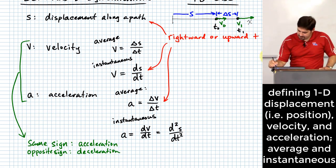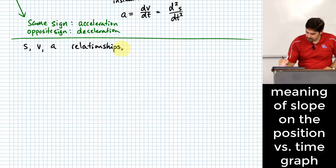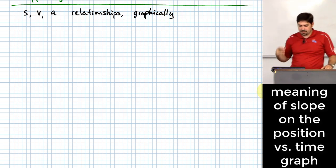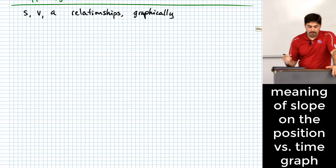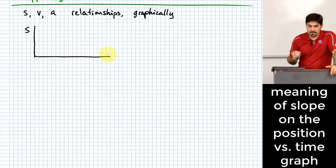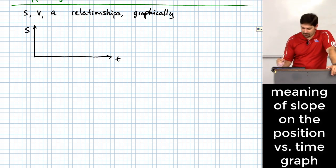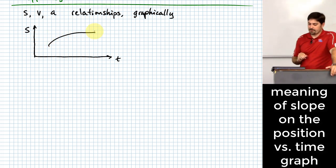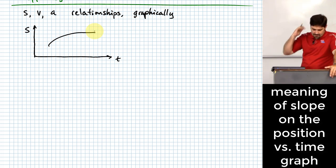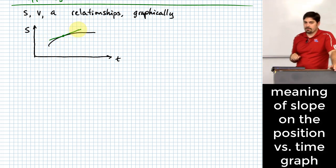Now we're going to look at a few graphs — the S, V, and A relationships graphically. The first is the S-T curve: S being displacement and T being time. I'll draw some shape of a curve on this graph. At a particular point, think of the tangent line and the slope of that tangent line. How do you describe the slope of a tangent line at a point mathematically? That would be a derivative.